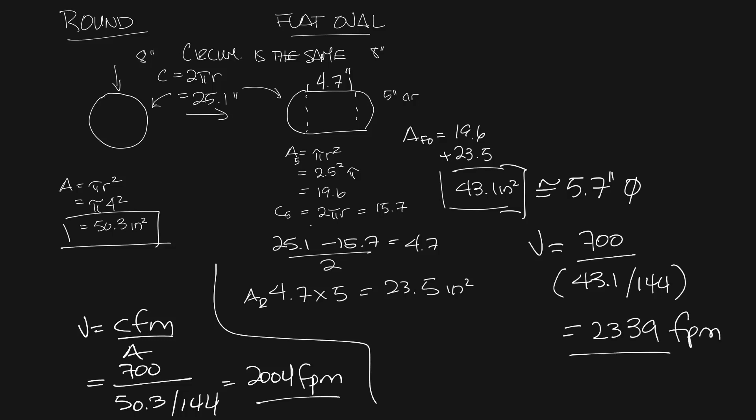So the air going through the flat oval is going about 300 feet per minute more than through the round. So depending on your application and what your airflow is, going from a round to a flat oval may cause issues in sound or pressure loss.